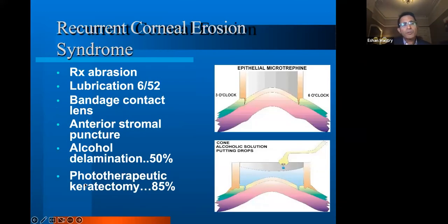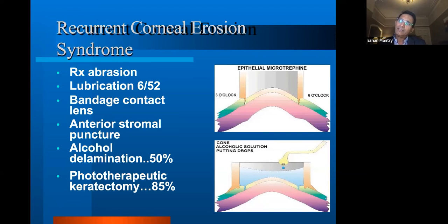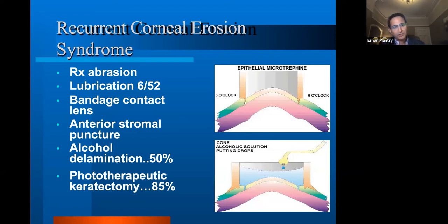The most important aspect of recurrent corneal erosion is actually treatment. Nine out of ten times, they all settle with lubrication — preservative-free lubrication, not hypomelose. I would go for preservative-free like sodium hyaluronate in these situations. There is evidence that if there is meibomitis or anything affecting the tear film, a course of doxycycline can help. But more importantly, preservative-free lubrication is what is needed.